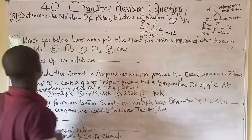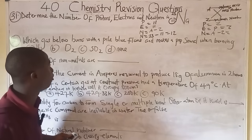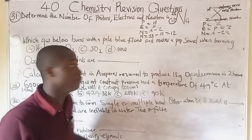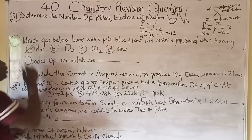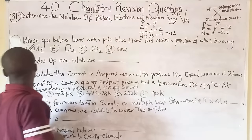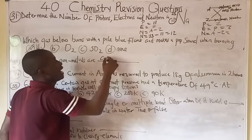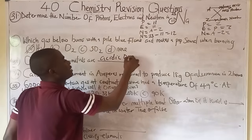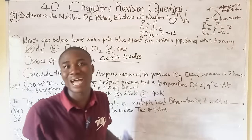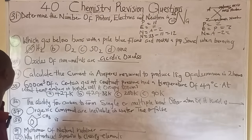Question thirty-two: which gas burns with a pale blue flame and makes a pop sound when burning? The answer is hydrogen gas. This is one characteristic property of hydrogen gas. Question thirty-three: oxides of non-metals are called acidic oxides, also called acid anhydrides.